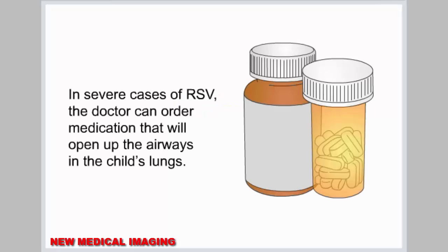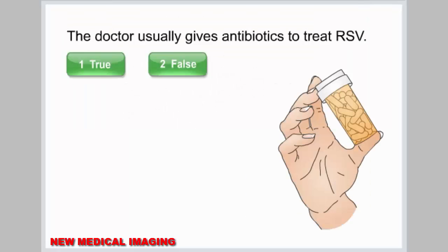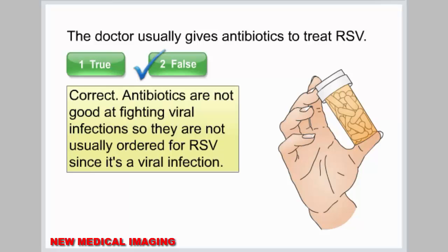In severe cases of RSV, the doctor can order medication that will open up the airways in the child's lungs. If the child has complications from RSV, he or she may need to stay at the hospital, where health care providers will help the child breathe better with oxygen and/or special breathing machines. Fluids are given through a vein to prevent dehydration. Antibiotics are not good at fighting viral infections, so they are not usually ordered for RSV since it is a viral infection.